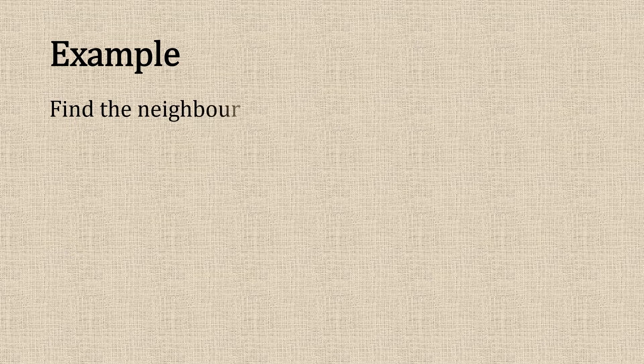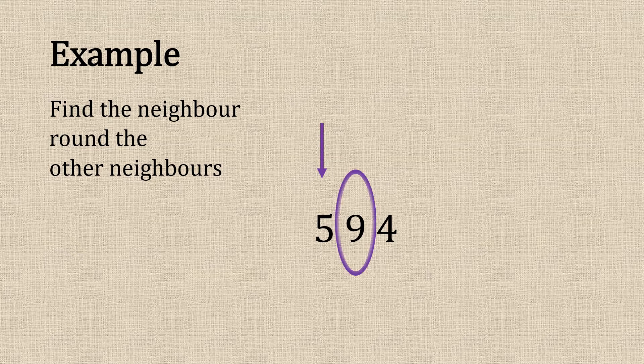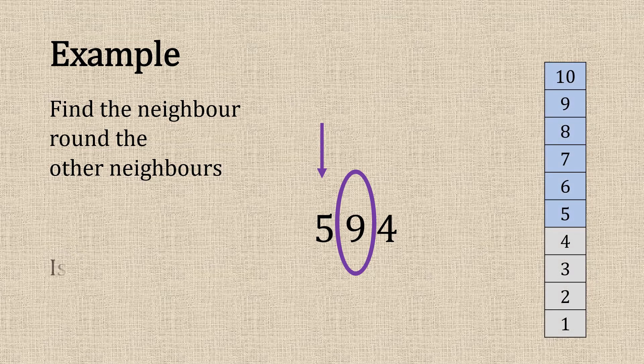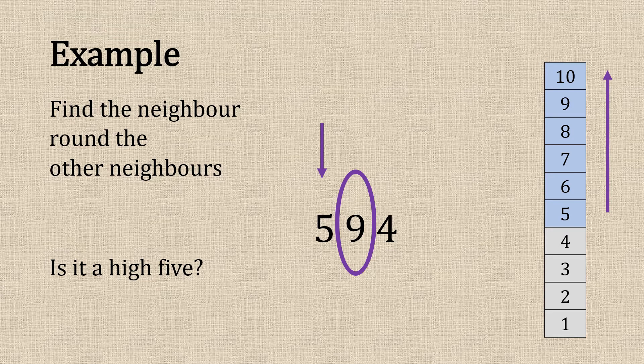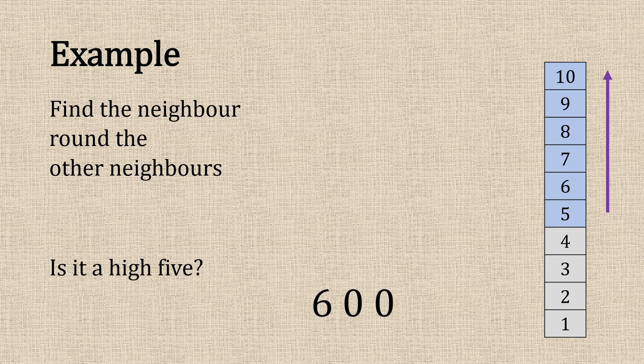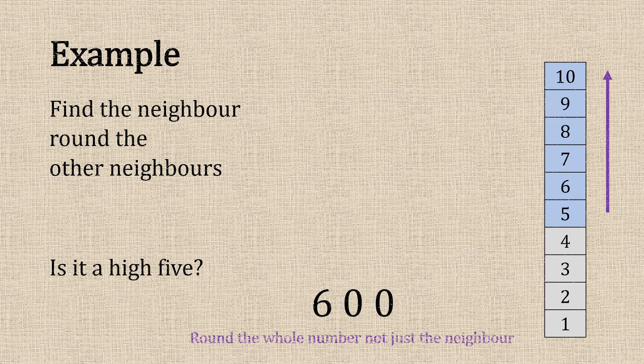Example: we find the neighbor and then we round the other neighbors. This is the difference with whole numbers. Our five—the neighbor is a nine, so that's a high five, so we're going to round up and add the one. That makes our whole number change to 600. Round the whole number, not just the neighbor.